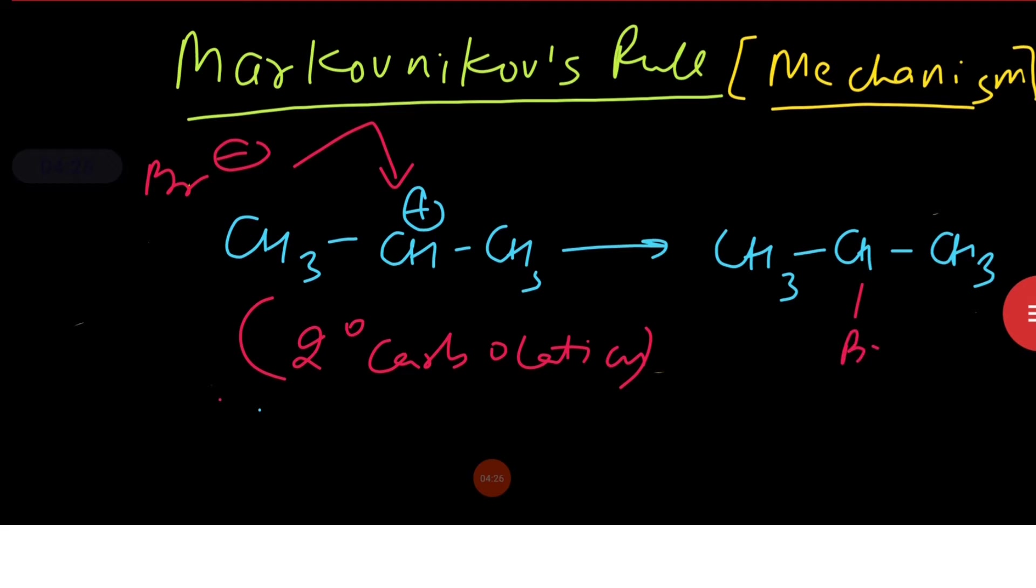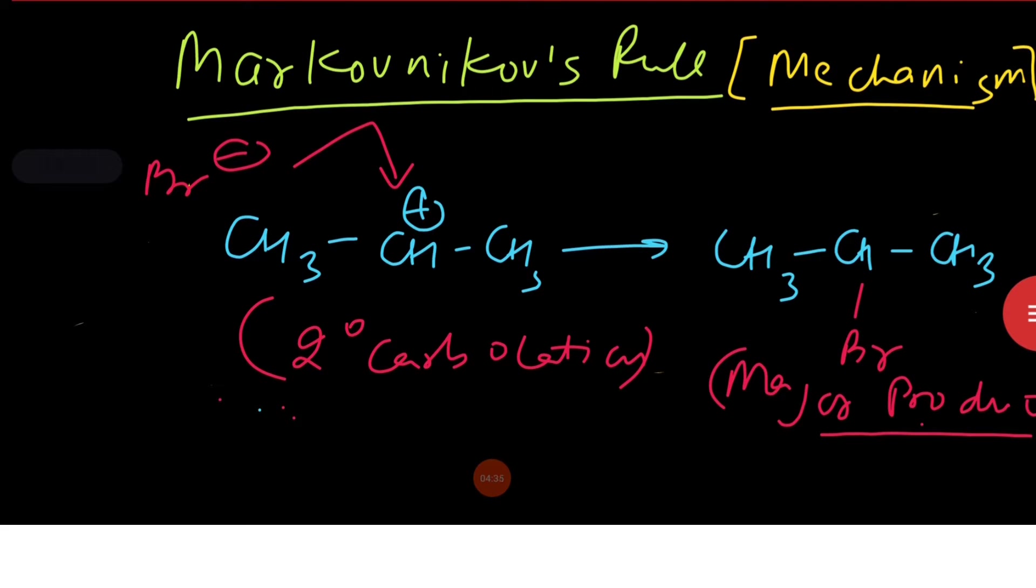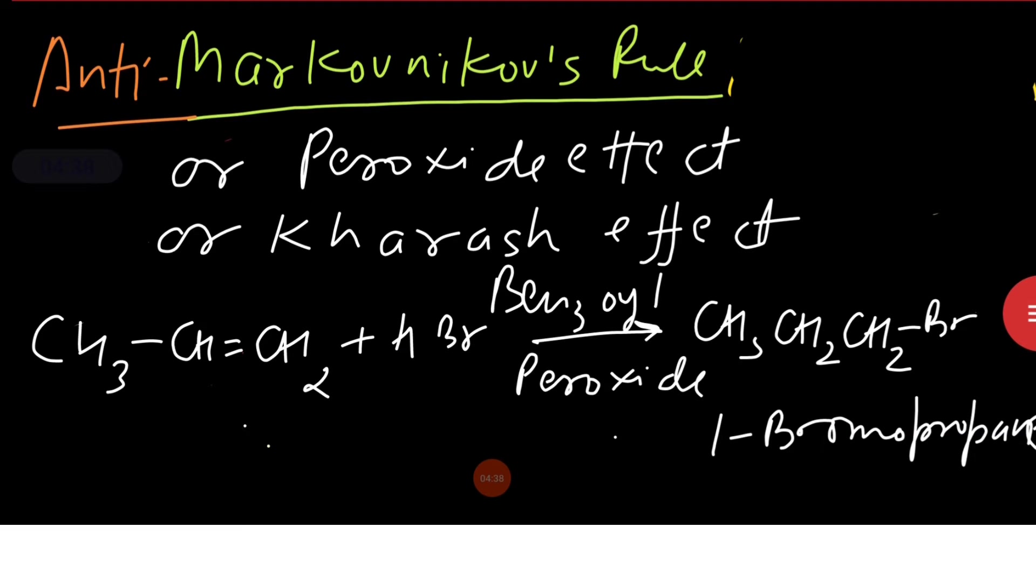Therefore carbocation B is attacked by bromide ion. So here you see Br negative ion attacks on secondary carbocation and forms 2-bromopropane as major product. Now anti-Markovnikov's rule, it is also called as peroxide effect or Kharash effect. So when attack of HBr occurs on unsymmetrical alkene like propene in the presence of benzoyl peroxide, then 1-bromopropane is the major product.